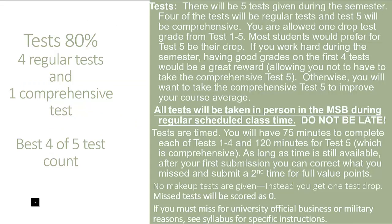20% homework, 80% test. There are five tests. The last test is comprehensive but droppable — the best four of your five tests count. If your first four test scores are really good, the comprehensive final could be your droppable, which effectively means you wouldn't have to take it during final exam week. That's a strong incentive to do well on tests one through four. But if you do have one poor test grade, it can be your drop, and test five can replace it.